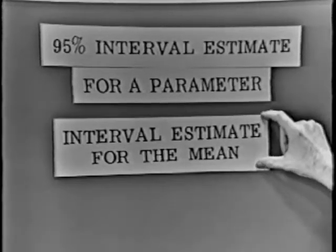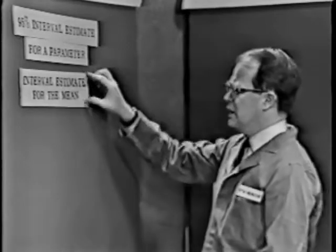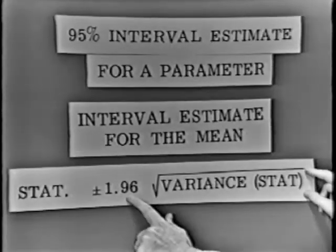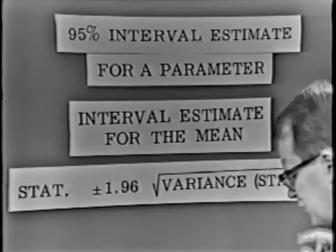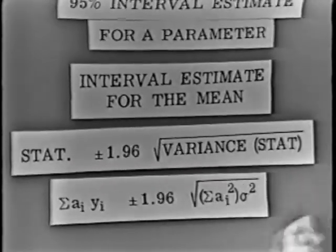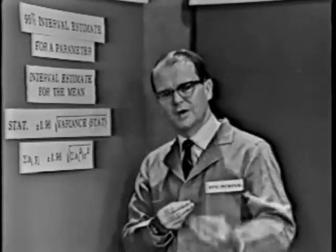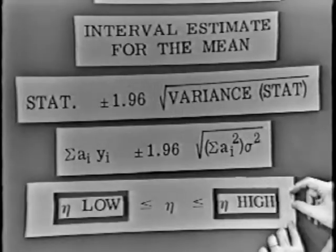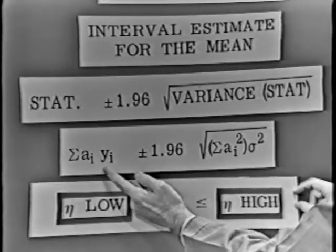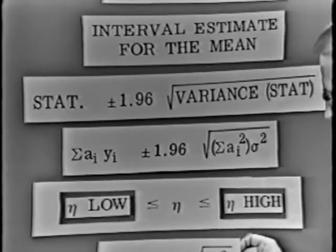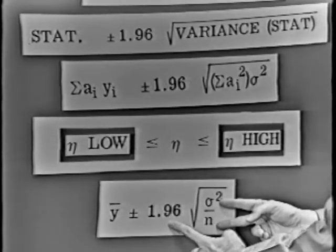How would we make the interval estimate for the mean? We can generalize the use of the normal deviant. We can take the statistic — whatever statistic we're dealing with — plus or minus 1.96 times the square root of the variance of that statistic. The statistic has to be a linear combination of the observations. Our statistic will be the one that estimates the parameter we're concerned with, the mean. That gives us an interval statement given by the statistic — the average — plus or minus 1.96 times the variance of that statistic: y-bar plus or minus 1.96 times the square root of σ² over n.